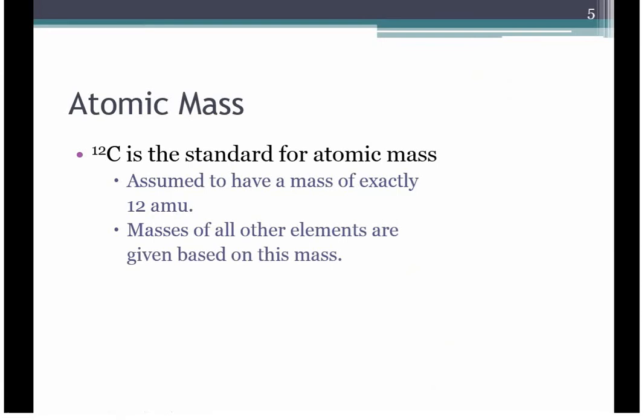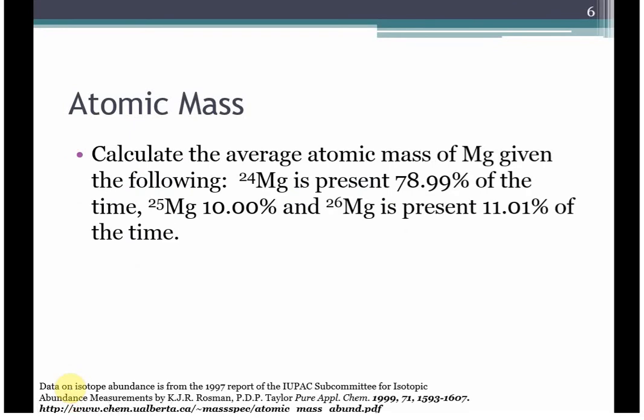Now if you think back to carbon, we talked a little bit about the mass numbers in unit 2, and we're going to do that again here for just a few minutes. We use carbon-12 as the standard for all atomic mass. We assume that carbon-12, an isotope of carbon-12, is going to have a mass of exactly 12 AMUs or atomic mass units. Everything else is going to be held to this standard. We're going to calculate it based off this carbon-12 mass. So let's look for example. I got this isotope abundance information from the IUPAC subcommittee. And so you have the link down here if you want to follow it. I thought that was really interesting.